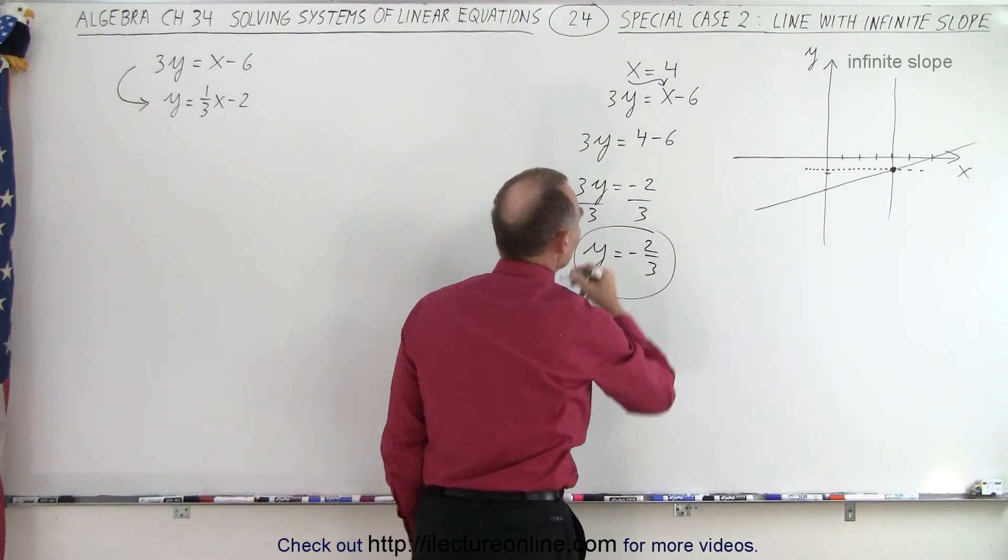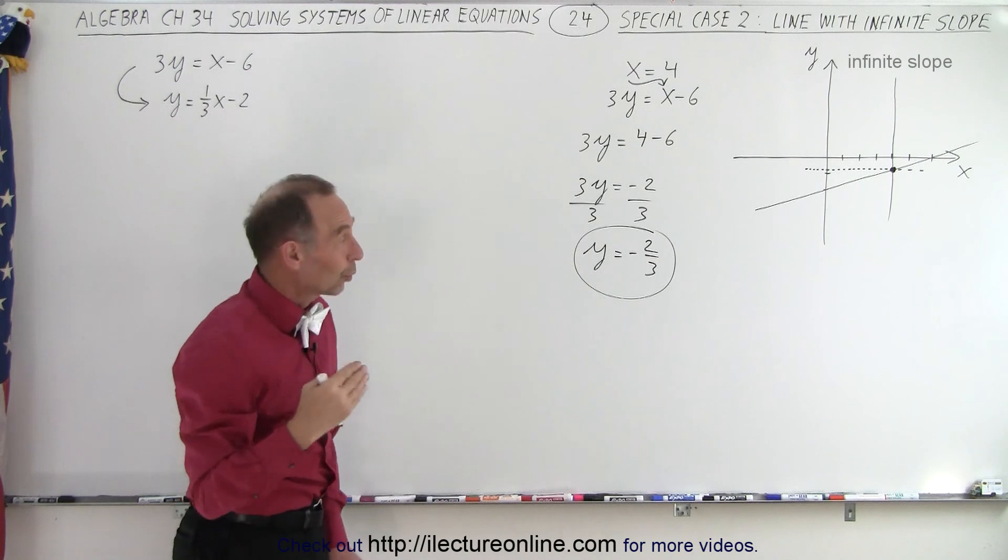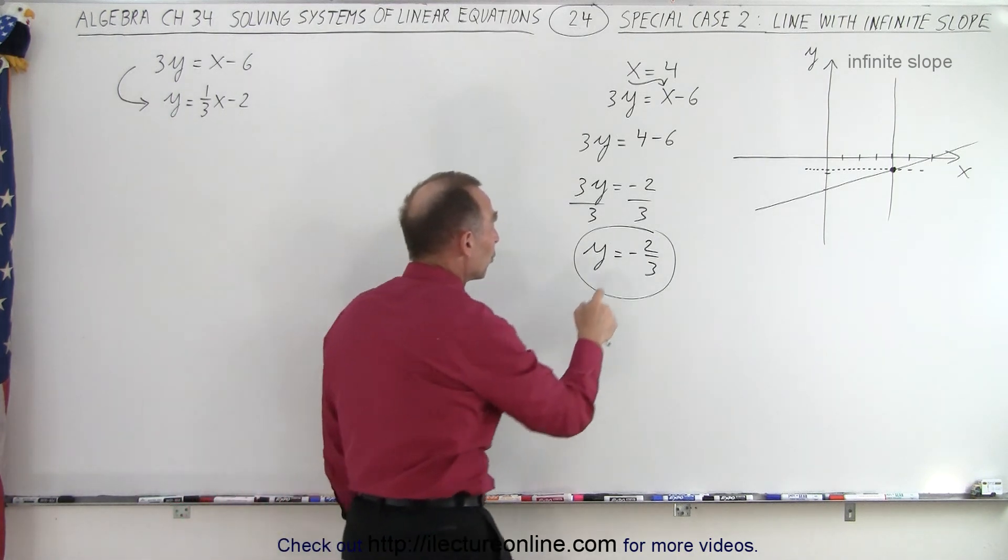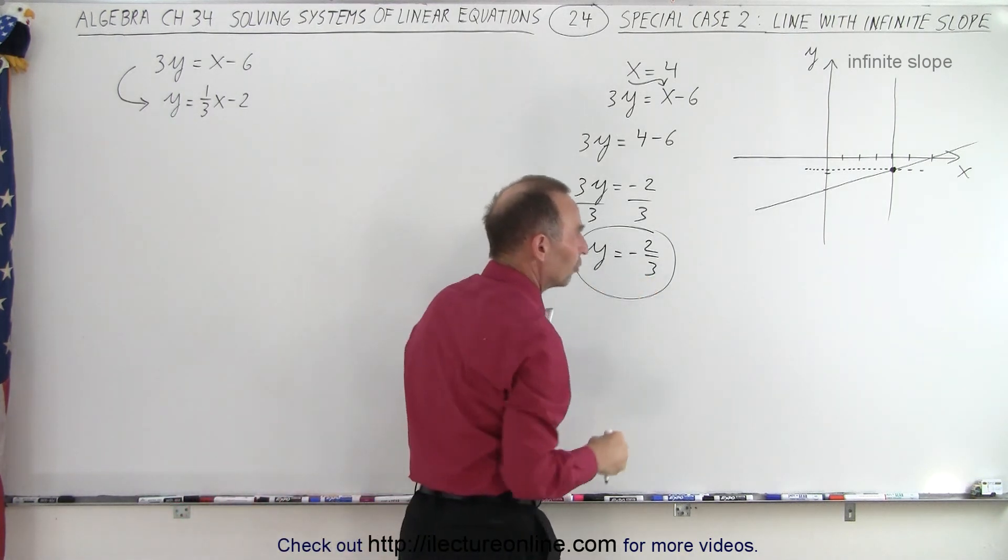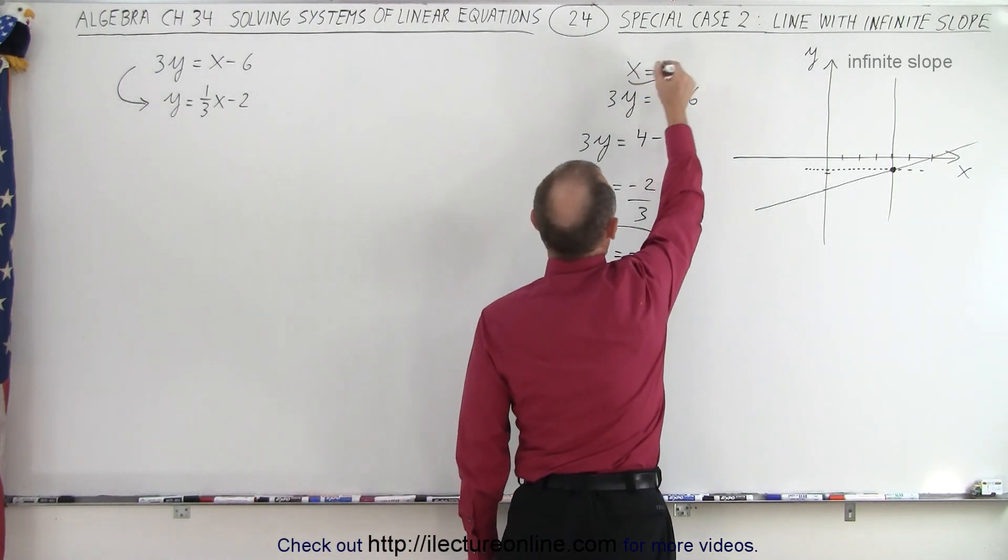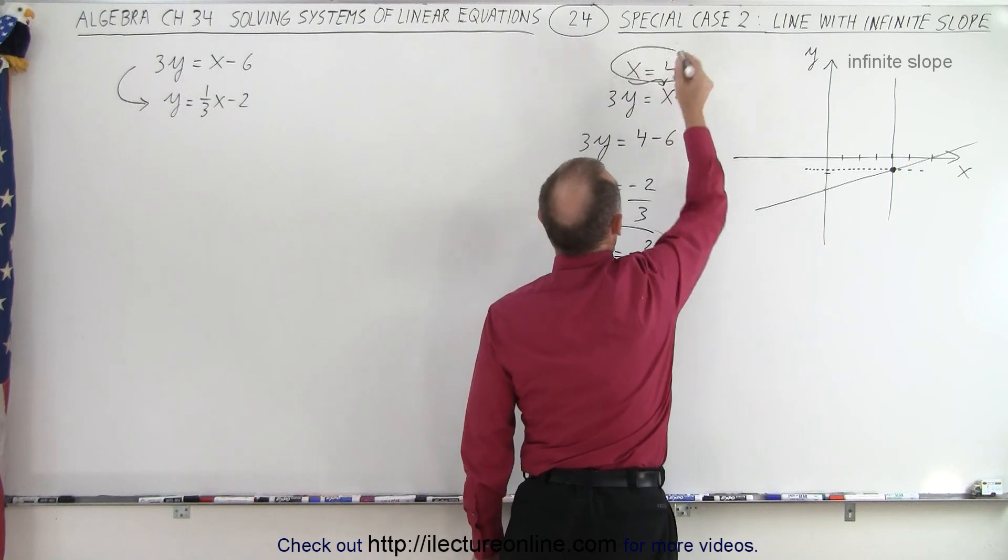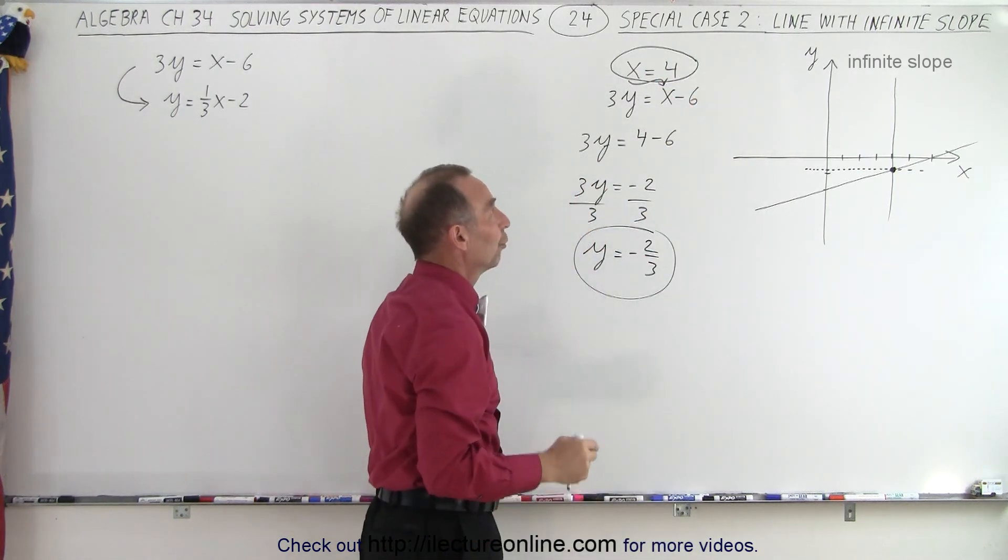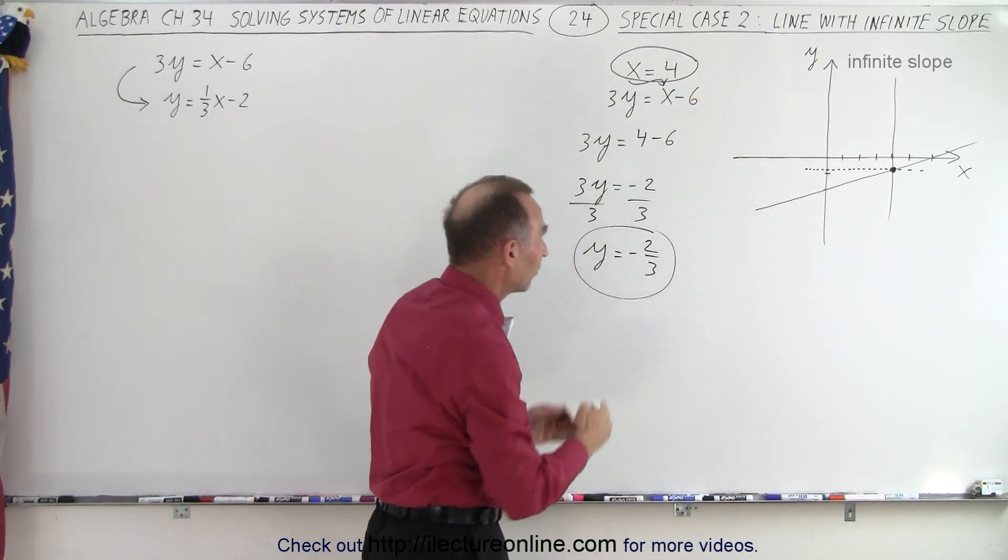So what that means is that the location of where the two lines intersect, the value for y is equal to negative 2/3. And then you say, well, what is the value for x? Well, it turns out the value for x is already defined because everywhere x is equal to 4, and it's where those two lines then cross.